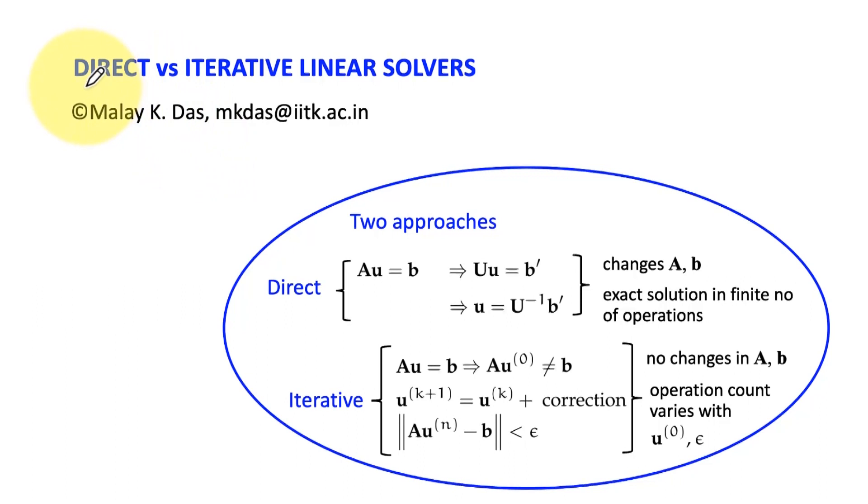So far in this course we have discussed Gaussian elimination and LU decomposition for solving systems of linear equations. Both these techniques fall under the category of direct solvers. By direct solver we mean that when we're trying to solve a system Au = b, our goal is to modify the matrix A and the vector b. We modify it in such a way that matrix A becomes really easy to invert. For instance, in Gaussian elimination, matrix A becomes an upper triangular matrix U, and because it is upper triangular, getting the unknown u is very easy. Also, in direct solvers we reach the exact solution in finite number of operations.